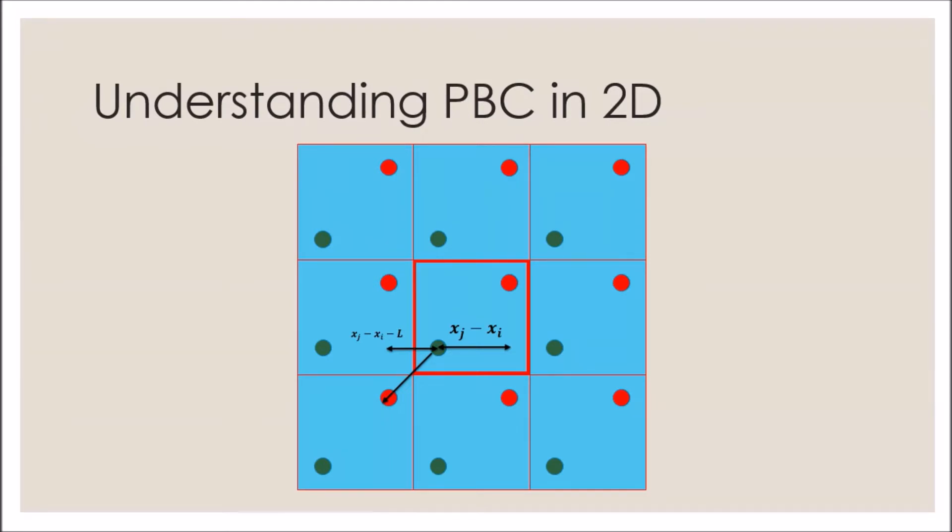Let's look into the difference between the x position of the red particle and the green particle. If we look into the original system which is at the center, the difference in the positions is given by xj minus xi. The difference of the x position with the red particle at the left and at the bottom left corner is both xj minus xi minus L. While the difference in position of the image at the bottom is constant with xj minus xi, so is the one at the top.